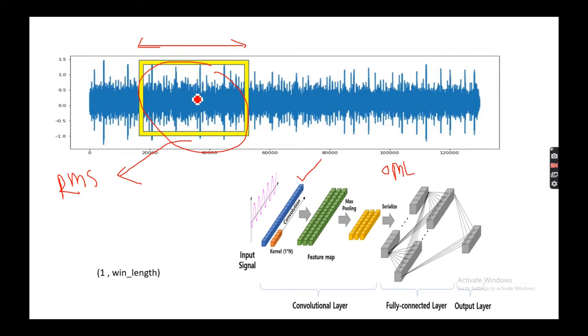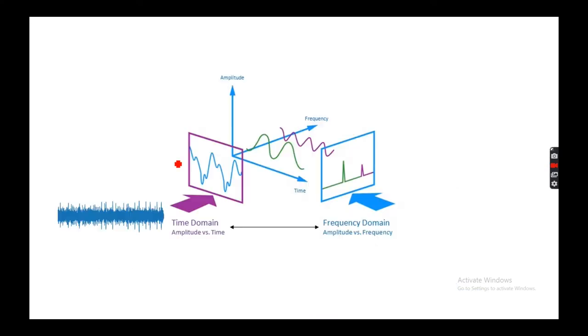I don't want to do any manual feature extraction. Rather I'll use a convolutional neural network and its kernels to extract features from the input signal that I am giving to it.